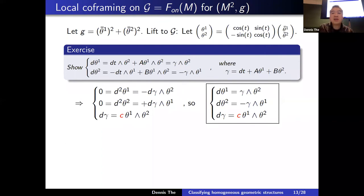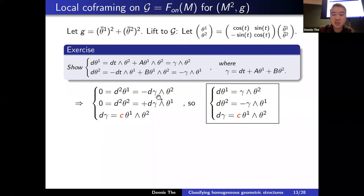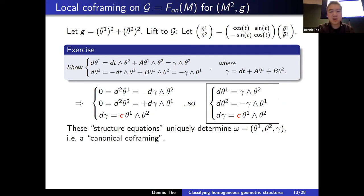The structure equation for dγ is obtained by applying d² = 0 (integrability) to the structure equations for θ₁ and θ₂. Since dγ is a two-form, it must be a multiple of θ₁ ∧ θ₂. These structure equations uniquely determine the co-frame — it is canonical. The functions a, b, and c appearing are totally determined.